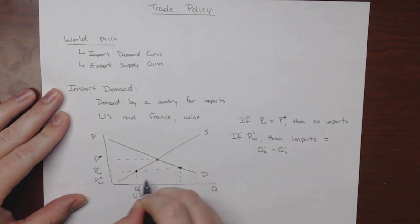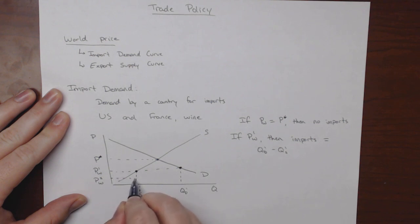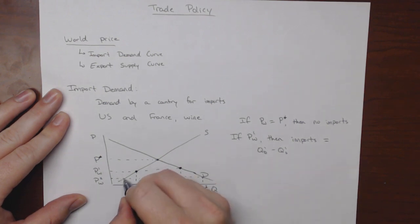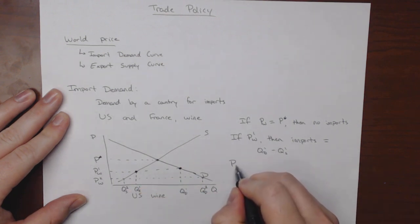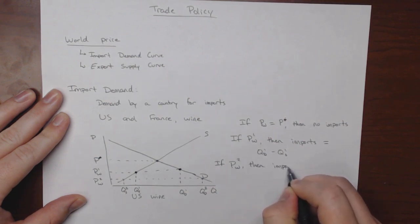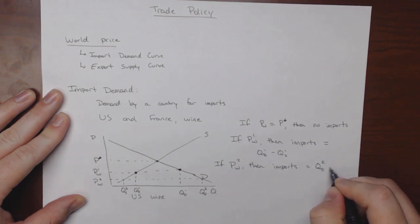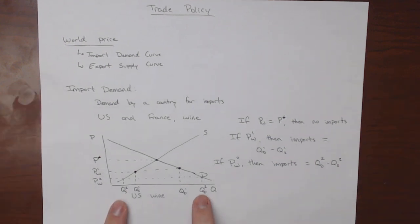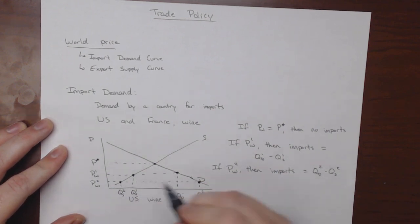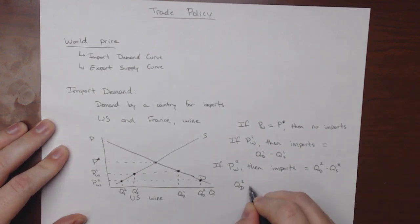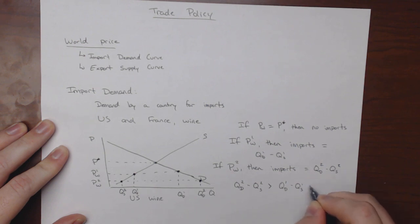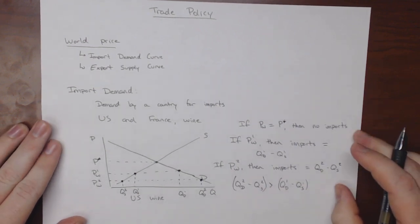If the world price goes down even further to PW2, the difference between quantity demanded domestically and quantity supplied domestically would increase. At this lower price, Americans are buying more wine total, and American wine producers are producing less, so QD2 minus QS2 must be bigger than QD1 minus QS1.